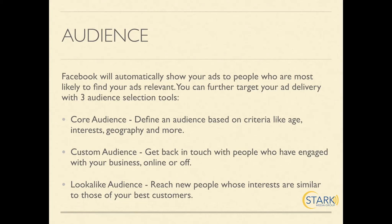Then the algorithm takes that information and shows your ad to everyone who shares similar online behaviors to those first 50 interactions. Your lookalike audience says: these were my core audience, this is my custom audience, now I want people who are similar to my custom audience. I want to reach new people whose interests are similar to those of my best customers. For example, if someone clicked through to buy my coffee cup, they'll find people with similar online buying behavior who are probably also interested in it.